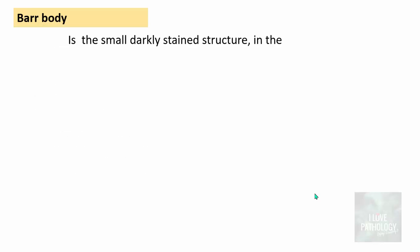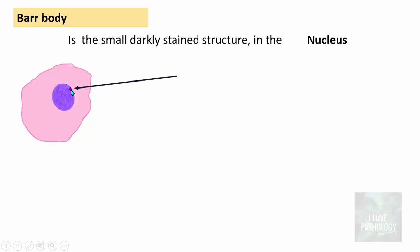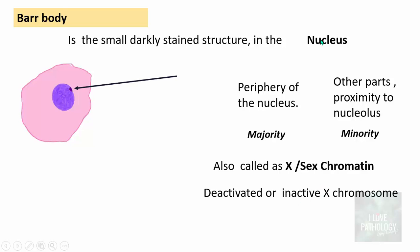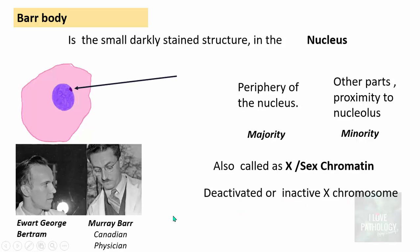Bar Body is a small, darkly stained structure in the nucleus, lying predominantly in the periphery of the nucleus, and sometimes in proximity to the nucleolus. It is also referred to as X chromatin or sex chromatin. Basically, this Bar Body is a deactivated or inactive X chromosome. This darkly stained structure is named after Dr. Bar, a Canadian physician who, along with his student Dr. Bertram, back in 1948, identified this structure.